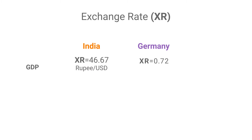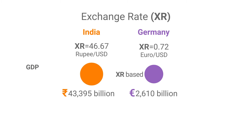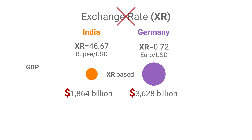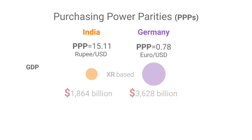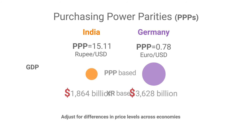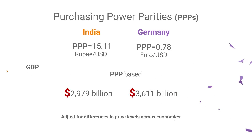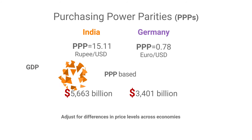Do we use market exchange rates? No. To compare the real size of world economies, purchasing power parities, or PPPs, are the better measure, because not only do they express economic output in a common currency, they also adjust for differences in price levels across economies. Using PPPs, we can convert the GDP of each economy into real terms.